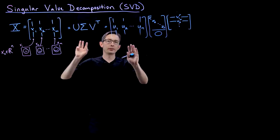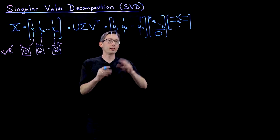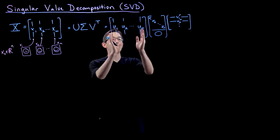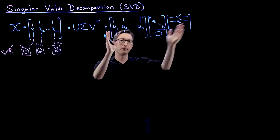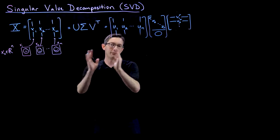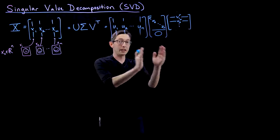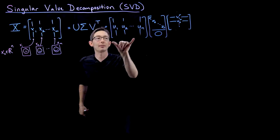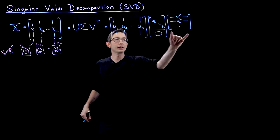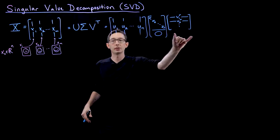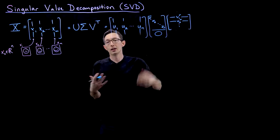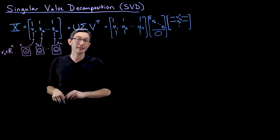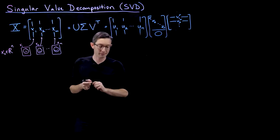There are two things I want to show you now. The first is how we can represent this expansion as a sum of rank-one matrices. Then in the next segment, I'll talk about how you can compute these and interpret them as encoding correlation structures within the data matrix X.